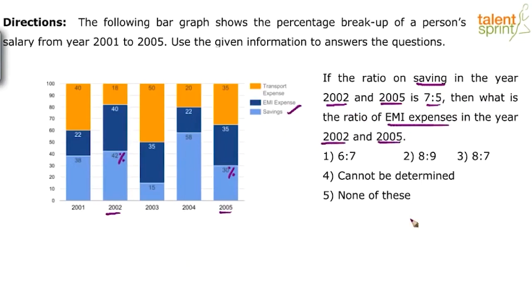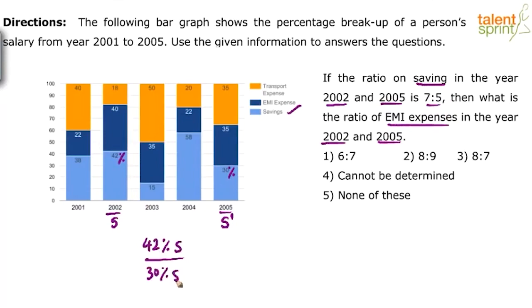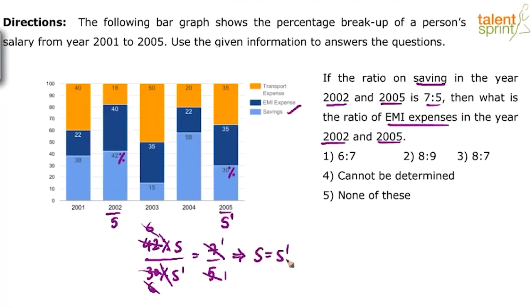Let us assume the salary in 2002 is S and that in 2005 is S'. For the sake of clear explanation I am writing all these steps in detail — in the exam you can do calculations mentally. So, 42% of S divided by 30% of S' equals 7:5. Percentages get cancelled by 100 and 100. Simplifying, 42/30 equals 7/5. So S/S' equals 1/1, meaning S equals S' — the salary in both years was equal.